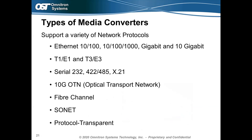Omnitron media converters support a wide variety of network protocols — all Ethernet protocols from 10 Meg up to 10 Gig, plus legacy protocols such as T1s, E1s, T3s, E3s, and serial protocols. Omnitron tries to never discontinue products because customers still need legacy support. Media converters also support 10G OTN networks, Fiber Channel protocols, SONET OC3, OC12, OC48, as well as protocol-transparent operation.